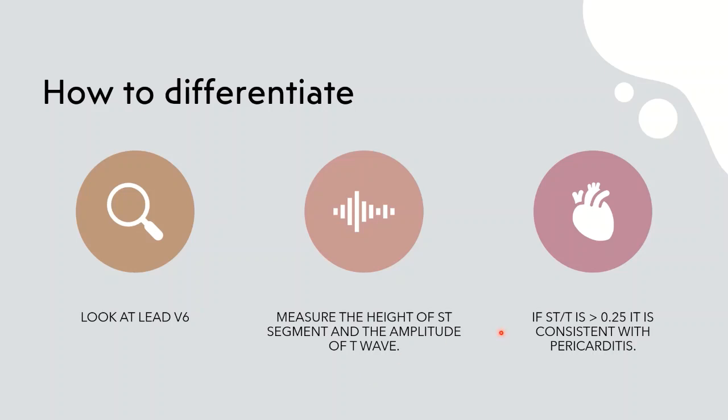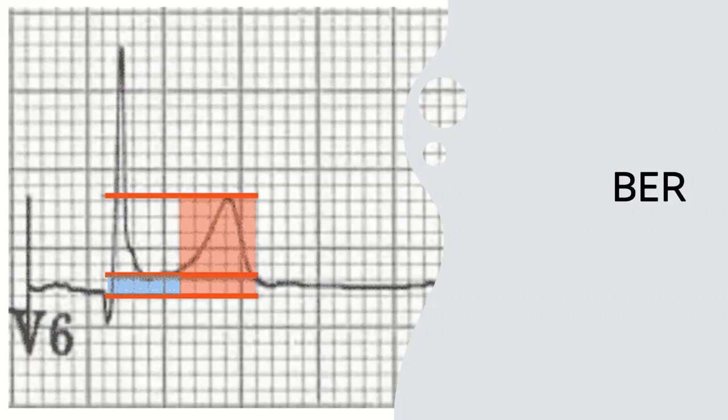And if the ratio of ST to T is more than 0.25, it is more consistent with pericarditis. So you see here this is the height I am talking about. Now if this height and this height, if the ratio is more than 0.25, it is more in favor of acute pericarditis.